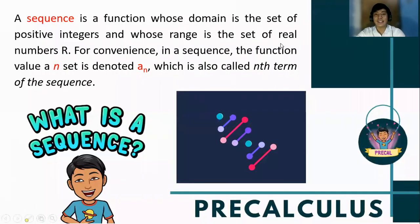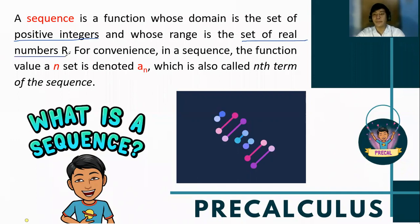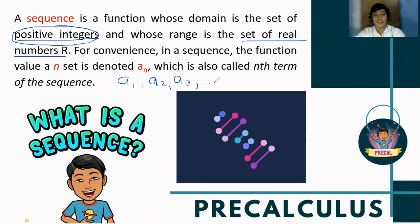What is a sequence? A sequence is a function whose domain is the set of positive integers and whose range is the set of all real numbers. The domain values are only positive integers because it is impossible to have a negative first term, negative second term, or negative third term. So the terms are represented as a sub 1 (first term), a sub 2 (second term), a sub 3 (third term), and so on up to a sub n, which is the nth term of the sequence.